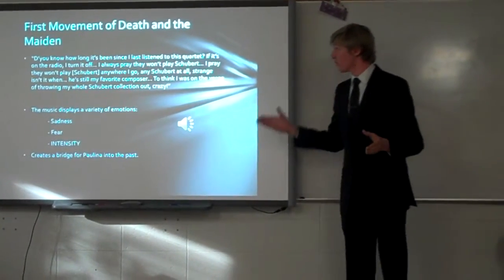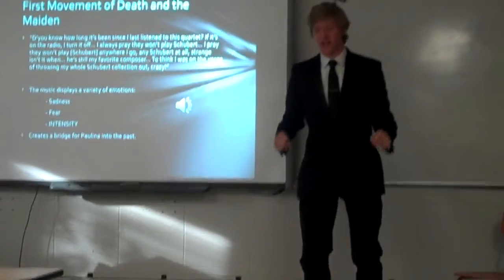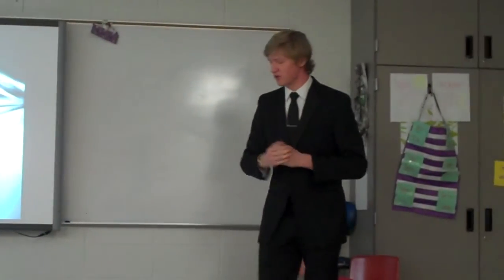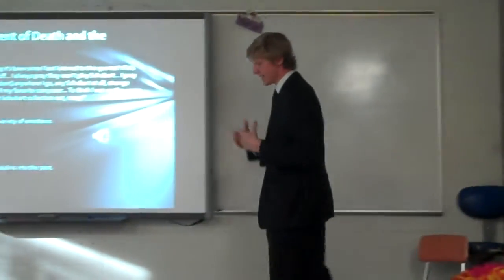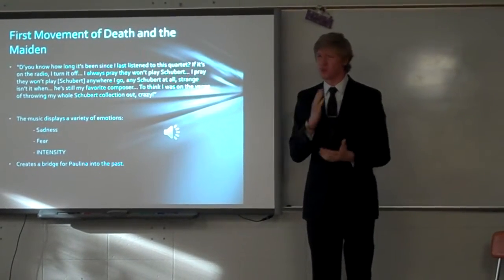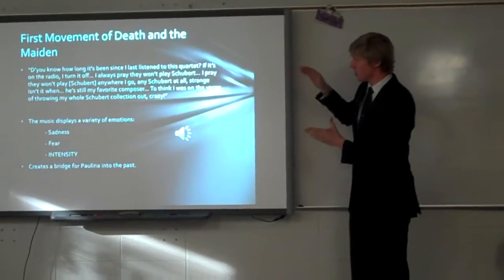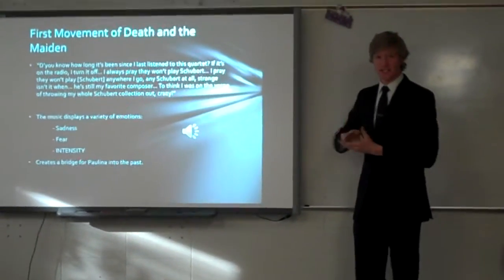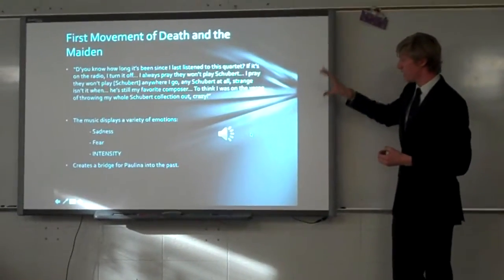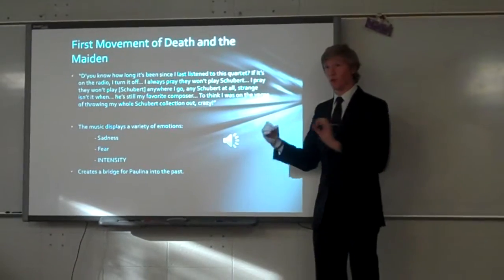The first scene where we have music is a scene where Paulina has just tied Roberto to a chair. She's walking around him with his pistol, insinuating things about Roberto and talking about some of the things he supposedly did to her. Then she begins to talk about Schubert and how that was the worst of all — that he played Schubert. To show how music can influence and deepen the mood, I've prepared a clip from the play, and I'm going to play the music while I read it.